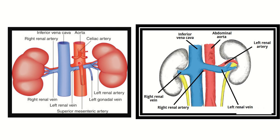Here we can see the superior mesenteric artery arising from the abdominal aorta. We can see a vessel going between the superior mesenteric artery and the abdominal aorta. This vessel is a vein — and this is the left renal vein. The left renal vein may be injured during aortic aneurysm repair, as it is very closely related to the superior mesenteric artery.